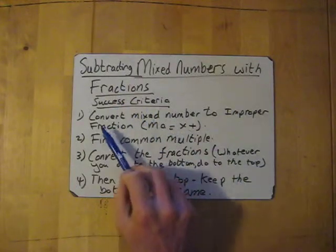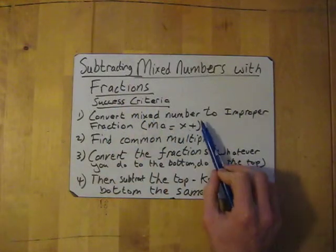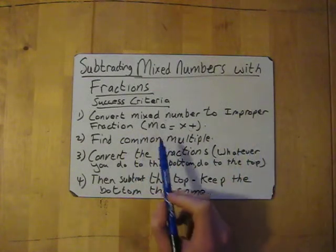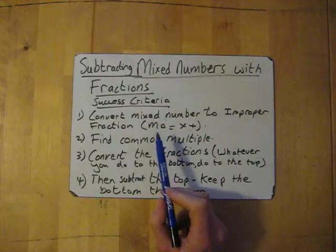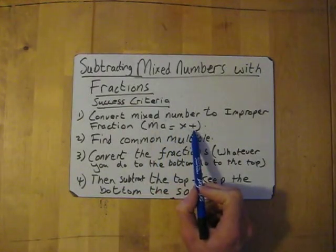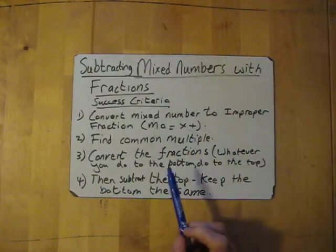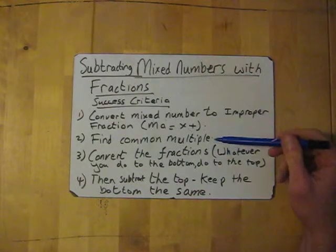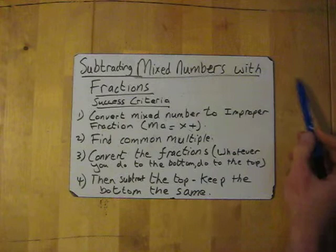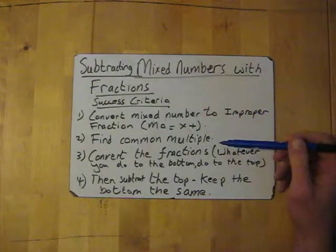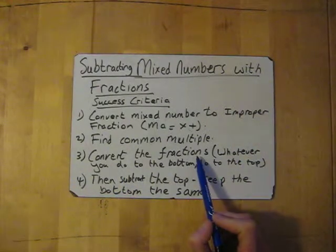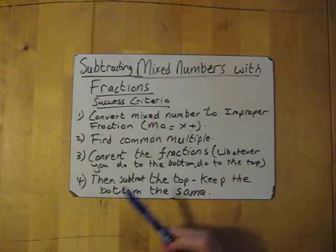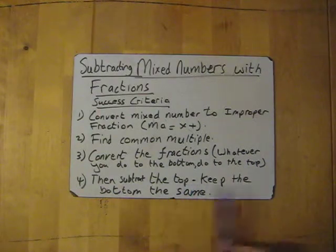Success criteria is you need to convert the mixed numbers into an improper fraction. I've got a video on that about how to ask for help. You ask your math, so you multiply and then add. I'll show you how to do that. But if you're not sure, go have a quick look at that video. Very simple. After you've done that, you need to find a common multiple between the two denominators, so the two bottom parts of the fraction. Then convert the fractions into the equivalent fractions with the new denominators. Whatever you do to the bottom, do to the top. And then subtract the top and keep the bottom the same.